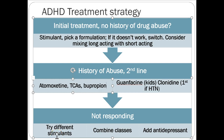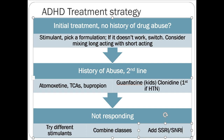If not responding, try different stimulants, different formulations, or combine classes — for example, a stimulant plus an antidepressant. Also consider treating depression, since many adults with ADHD have a depressive component. Using stimulants plus a depressive treatment arm can be helpful. Overall, stimulants are by far and away the mainstay of treatment for ADHD.